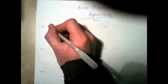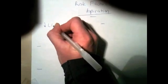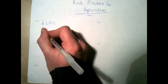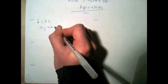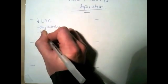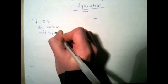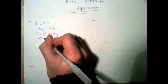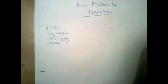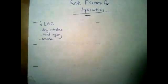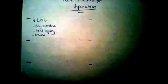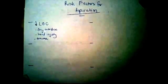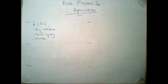The first category is decreased level of consciousness. This is very important and includes situations like drug overdose, head injury, any sort of trauma situation, or if you're concerned about any kind of central nervous system pathology that you don't know much about. These patients have a lack of control or a lack of their intrinsic ability to protect their own airway.